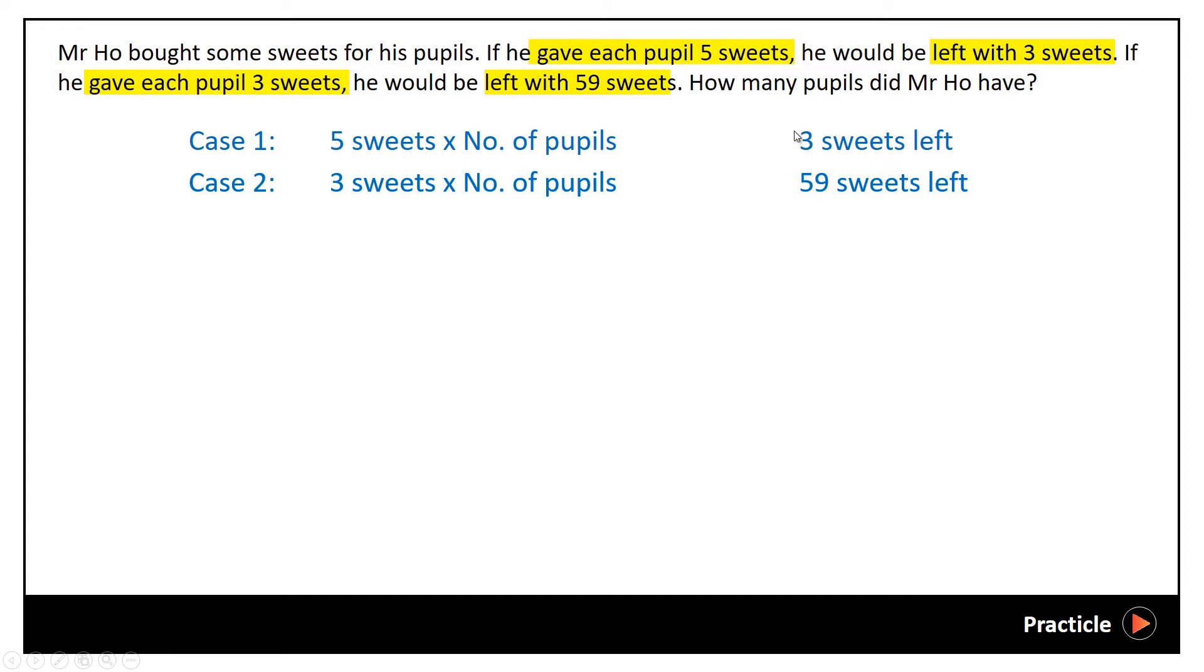So we are supposed to find the number of pupils that Mr. Ho had. How do we do that? First of all, we need to make use of what we have.